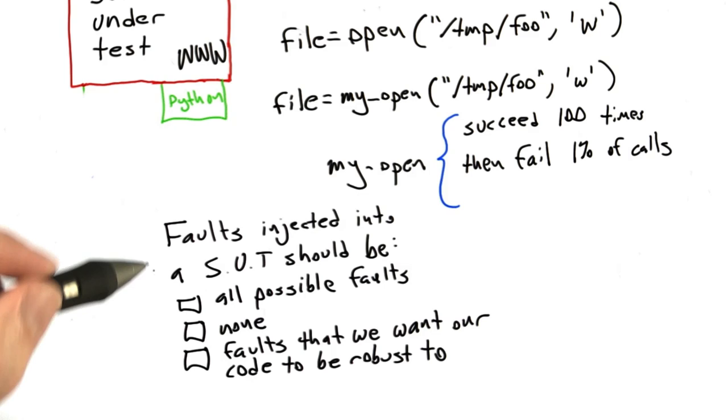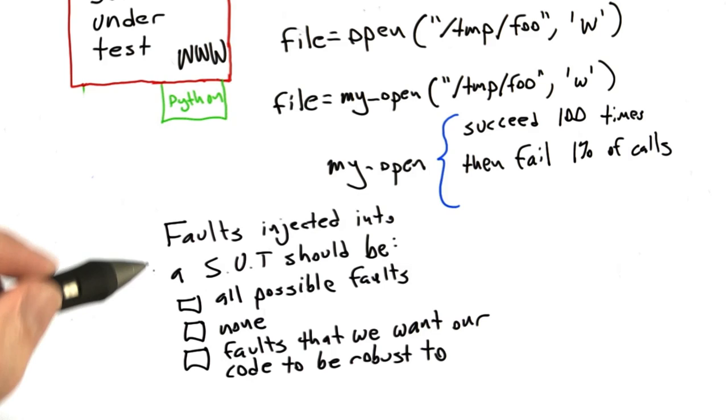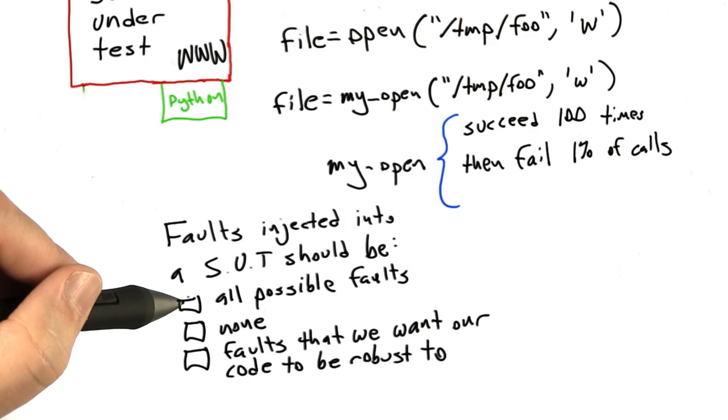And so let's just take a quick quiz over this material. So the quiz is, faults injected into some software under test should be: first, all possible faults; second, none; and third, faults that we want our code to be robust with respect to.